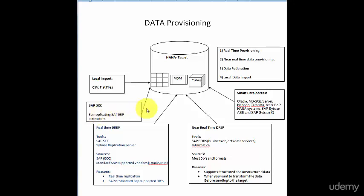Let's start with what is data provisioning. Data provisioning is the act of getting data, or being able to access data, from a source system to a target system without the interference of the data warehouse. In common language, you would say it means being able to bring data from the source system to the target system without the interference of the enterprise data warehouse.